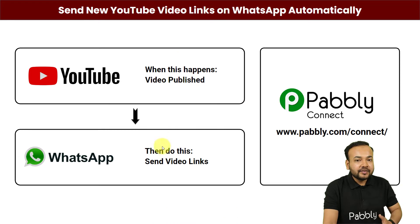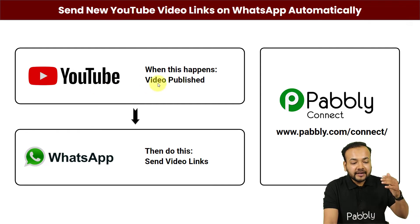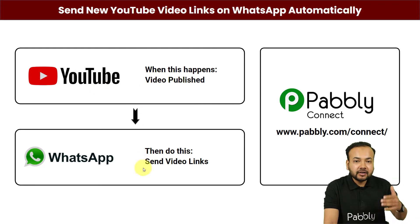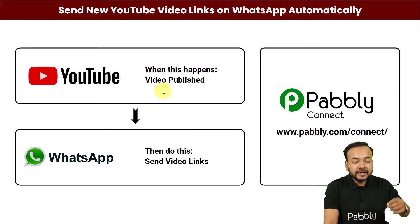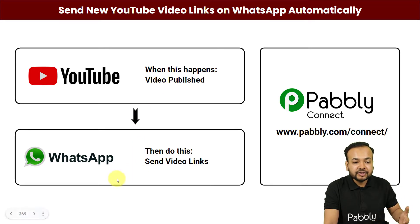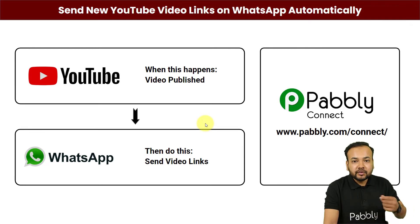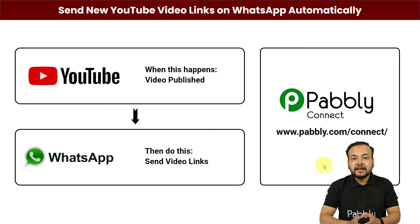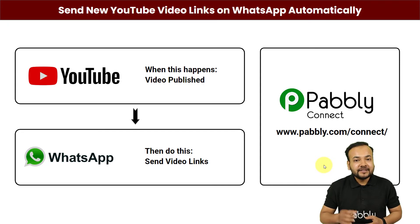This will be the flow of this automation: as and when you publish any video on YouTube, the link of that video is going to be shared with your audience on WhatsApp automatically. You do not need to copy and paste the video's link repetitively and send it manually. It will save your time and energy, and it will boost your views on YouTube. We are using Pabbly Connect, which is an integration and automation tool, and anyone can set this up without any coding skills or programming knowledge in just a few easy steps.